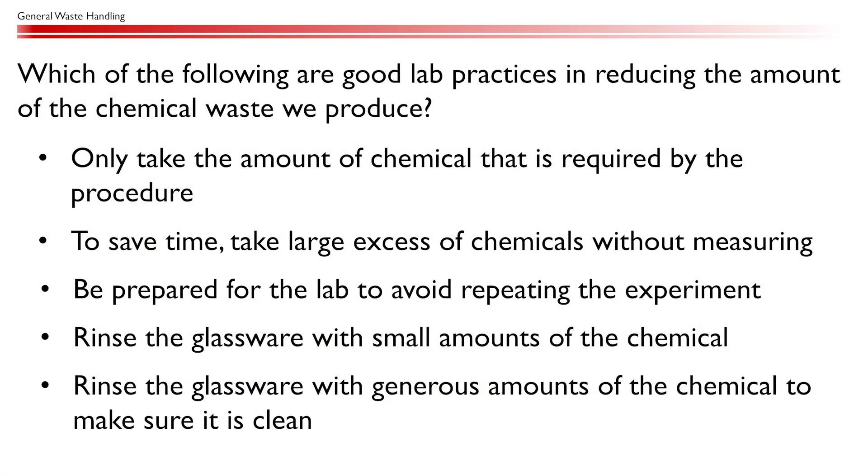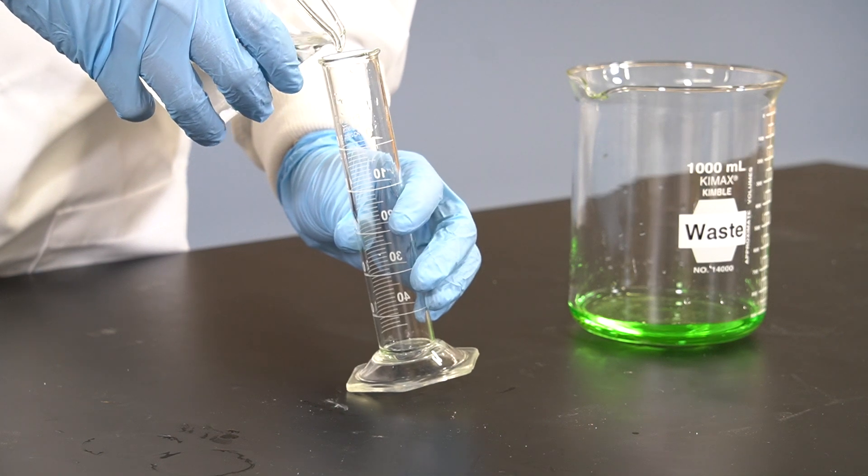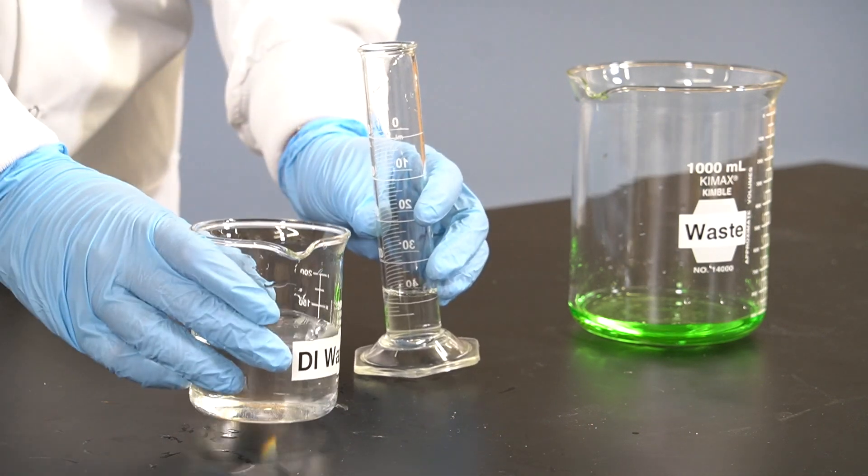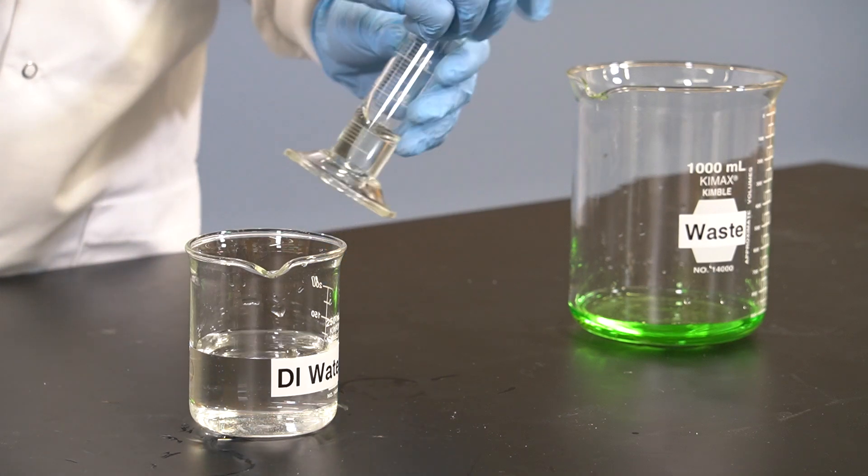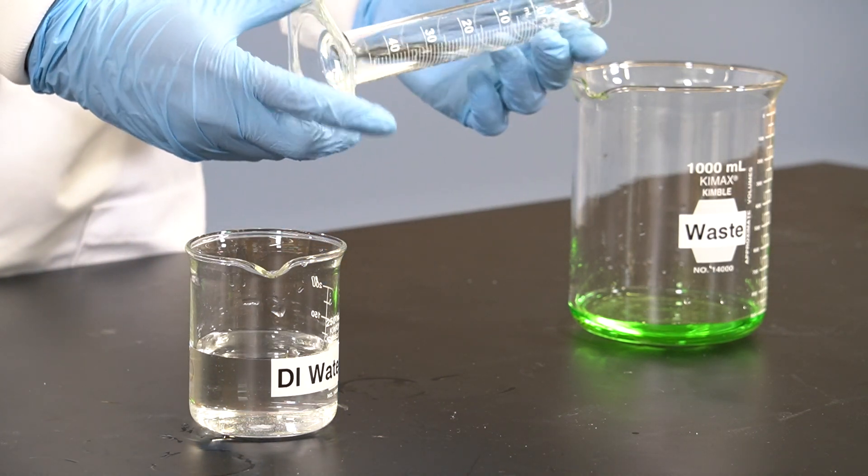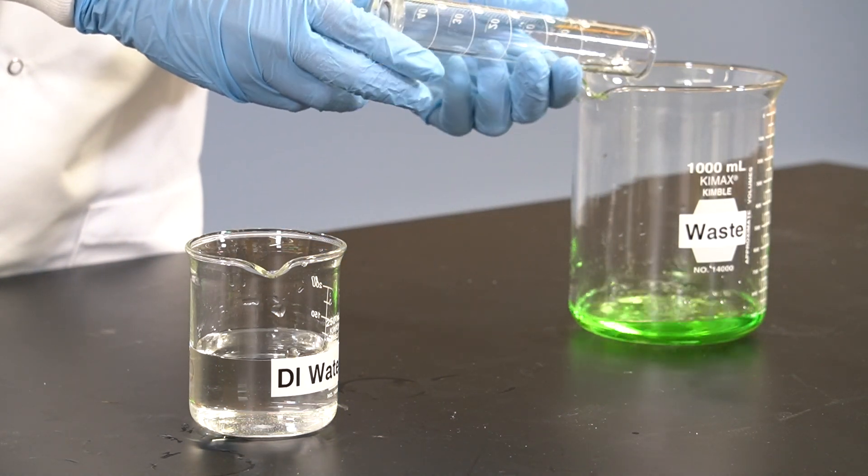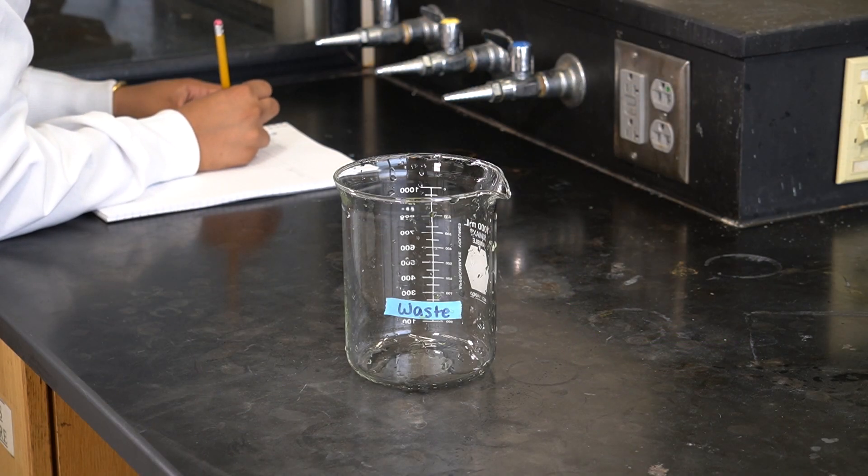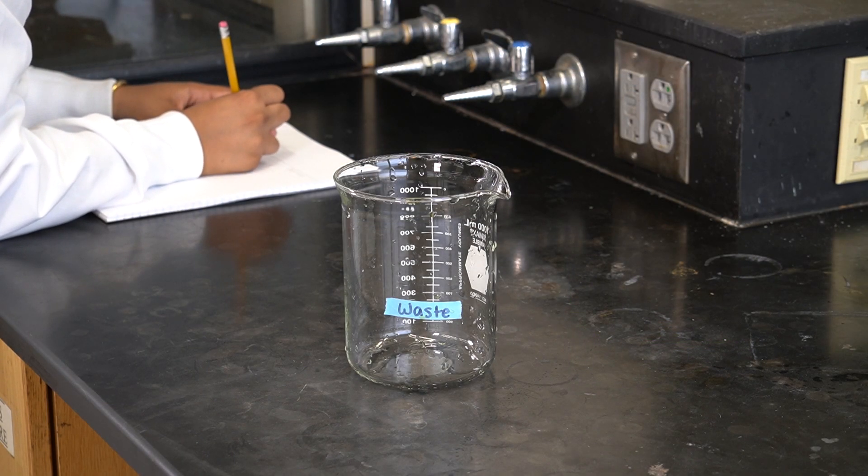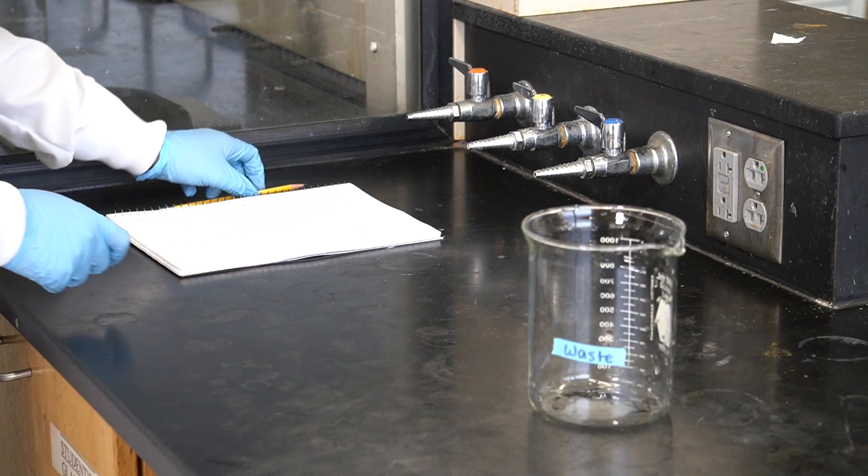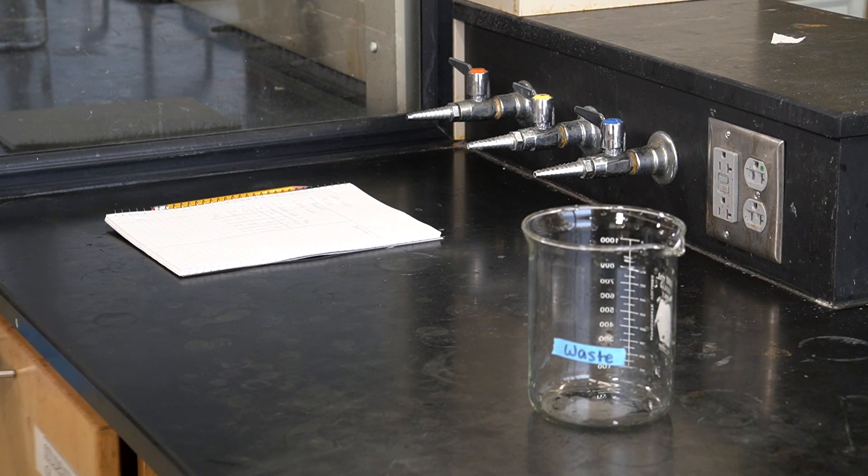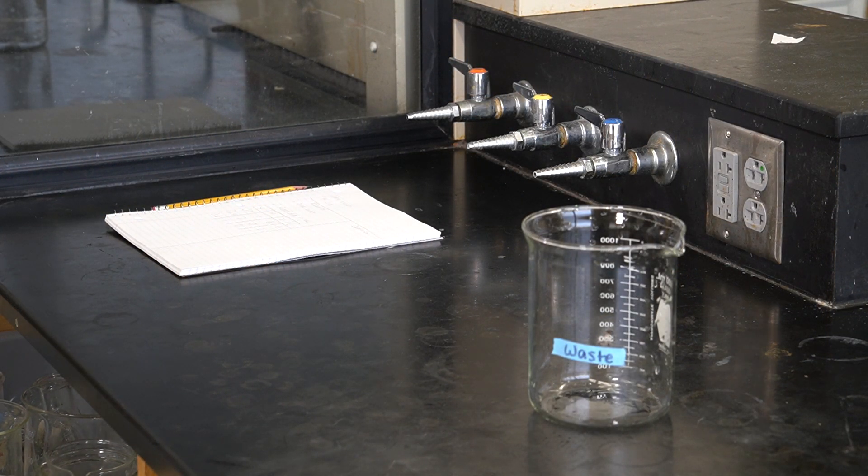Which of the following are good lab practices in reducing the amount of chemical waste we produce? Never take more reagents than what you think you'll need, and always rinse with limited amounts of chemicals. These two practices are essential for minimizing the amount of waste you generate. And of course, being prepared for the lab substantially reduces the chances that you will need to start over. If you do need to repeat an experiment, then you would be making much more waste than is necessary.